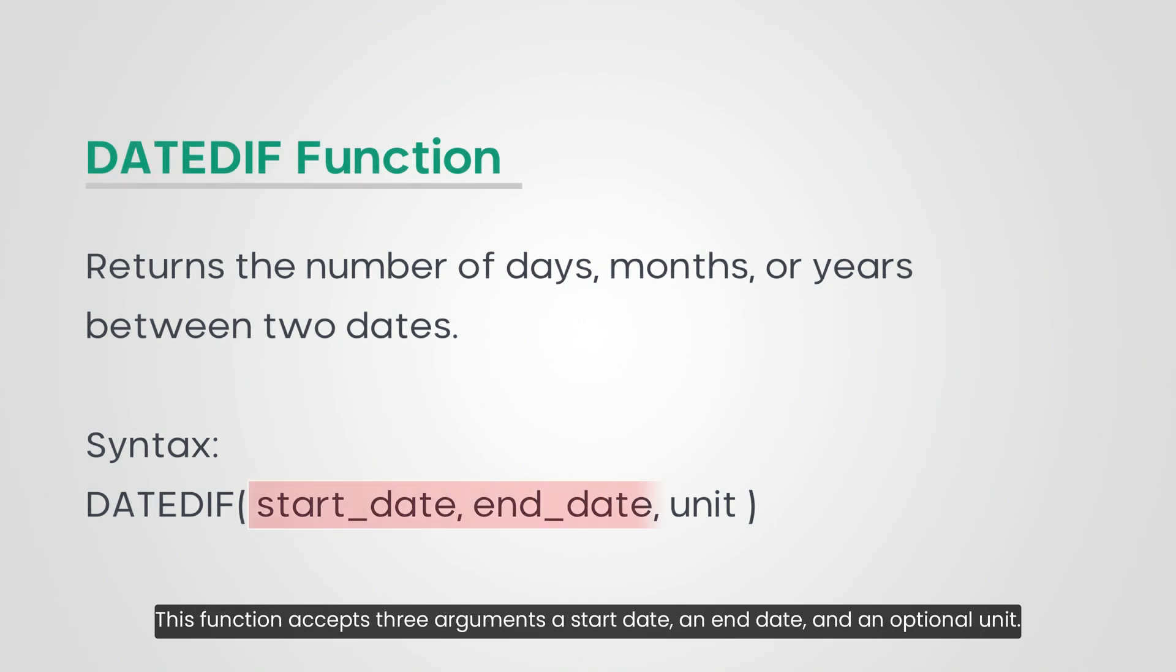This function accepts three arguments: a start date, an end date, and an optional unit. The unit argument represents the type of information we want the function to return.